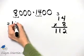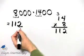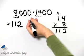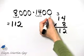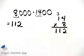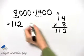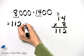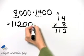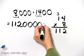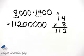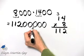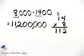So here's 112. This number contains three zeros at the end, so I'll insert one, two, three, four, five zeros. Then let's put in commas. The product is 11,200,000.